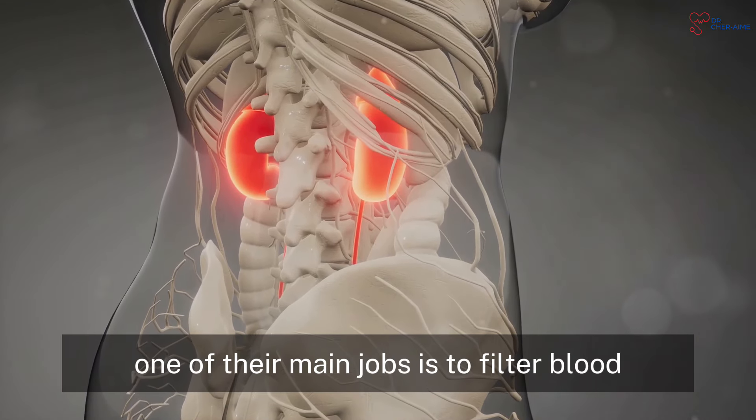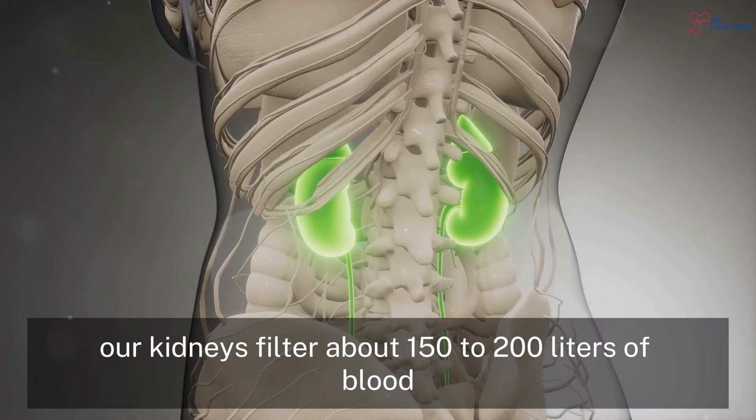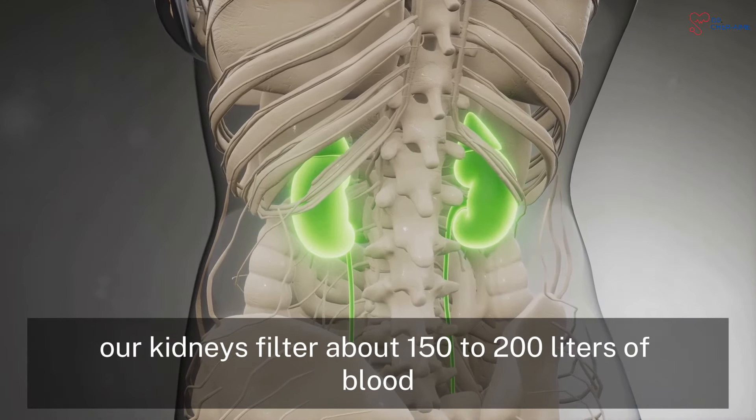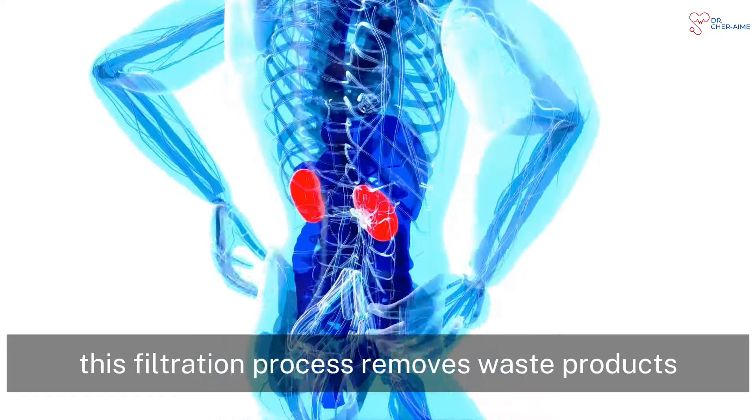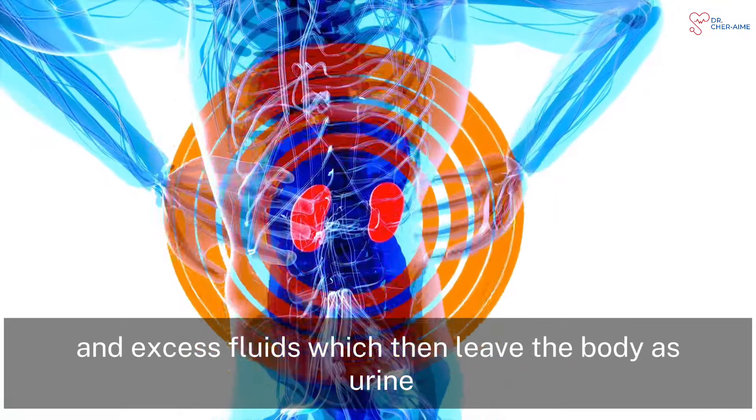They perform essential functions that keep our bodies running smoothly. One of their main jobs is to filter blood. Every day, our kidneys filter about 150 to 200 liters of blood. This filtration process removes waste products and excess fluids, which then leave the body as urine.